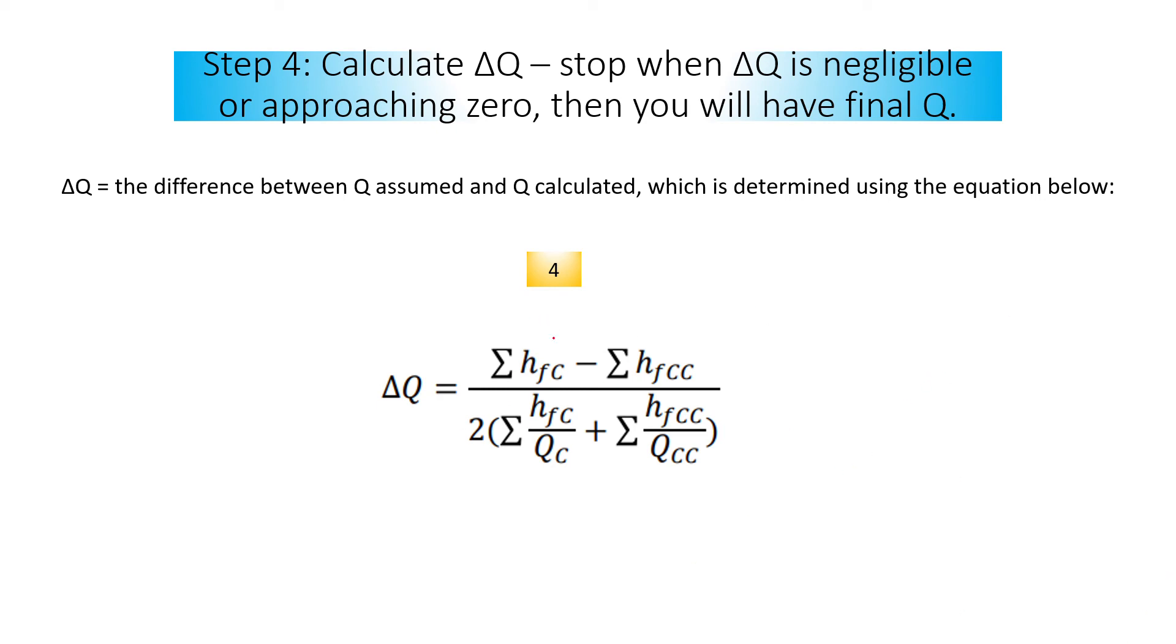Delta q equals summation of hfc - this is head loss in the direction of clockwise. This is also head loss but in the direction of counterclockwise. So cc is counterclockwise. You divide this with...